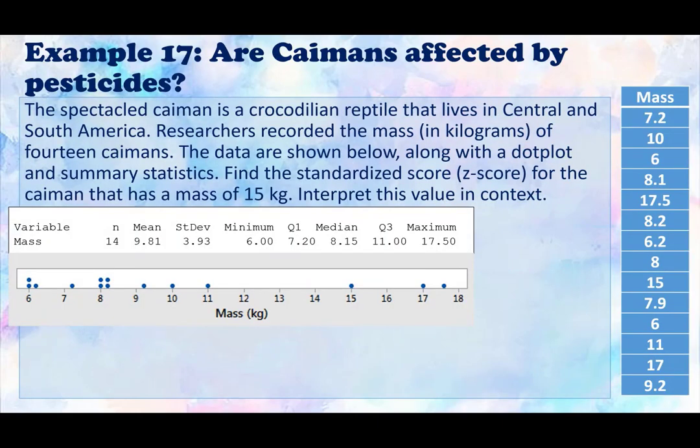Now, if you don't know, a caiman is like a little alligator or crocodile. They make really annoying noises. You guys should definitely YouTube that. So the spectacle caiman is a crocodilian reptile that lives in Central and South America. Researchers recorded the mass in kilograms of 14 caimans. The data are shown below along with a dot plot and summary statistics. Find the standardized z-score for the caiman that has a mass of 15 kilograms, and we're going to interpret this value in context. We know that z-score is going to be x minus the mean over the standard deviation.